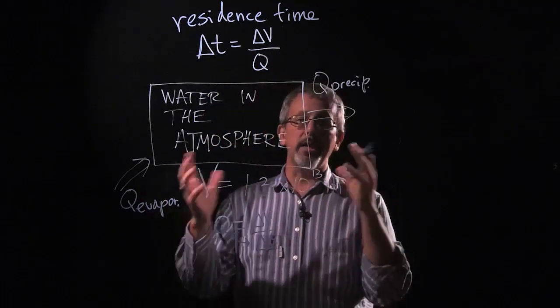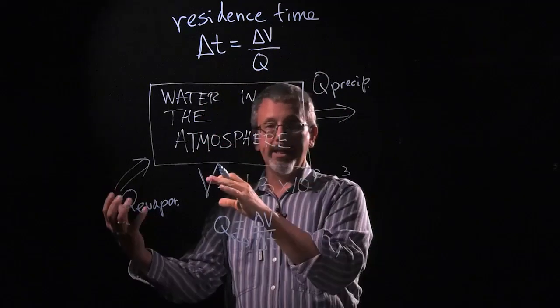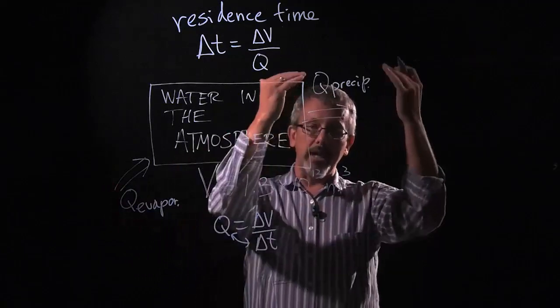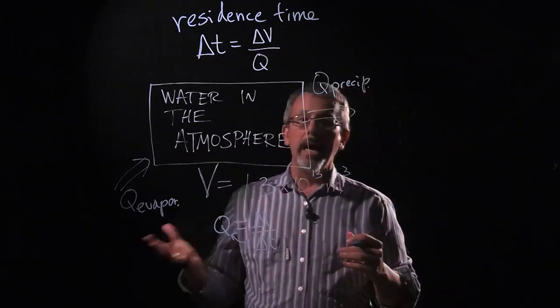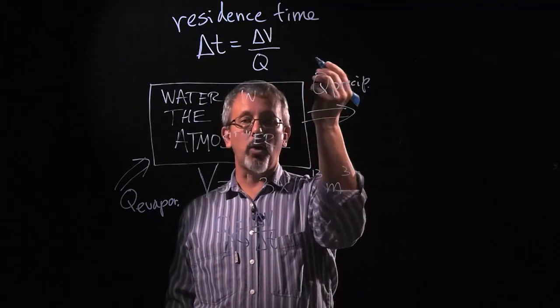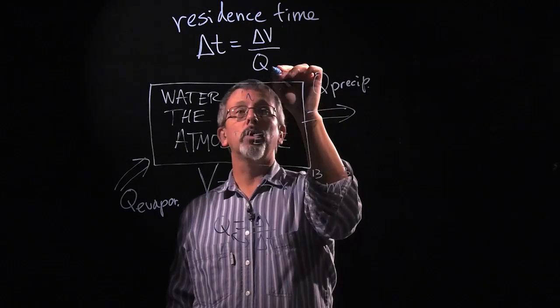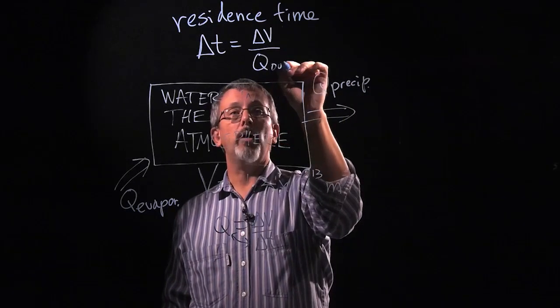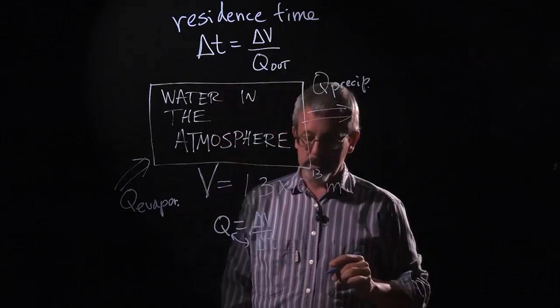But in this case, it's not the net flow. It's either the flow in or the flow out. You can think about it as emptying the entire thing and then refilling it. So this is the flow of either in or out because they're in equilibrium. We'll go ahead and say Q out since that's the one we happen to have measured in this case.